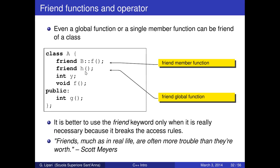It is better to use the friend keyword only when absolutely necessary, because it makes things confusing and breaks access rules. As Scott Meyers — a C++ expert — says: 'Friends, like in real life, are often more trouble than they are worth.' My recommendation is to not use friend at all unless you are really forced to do so.